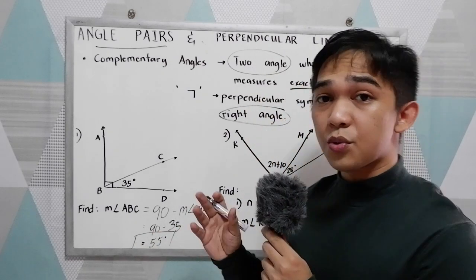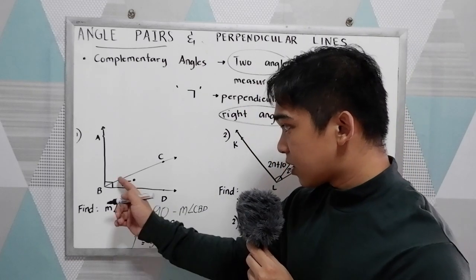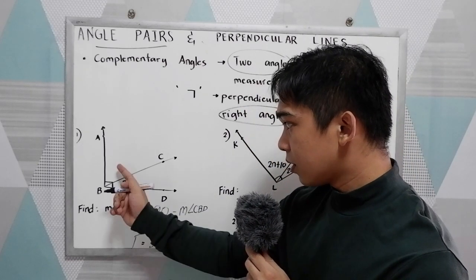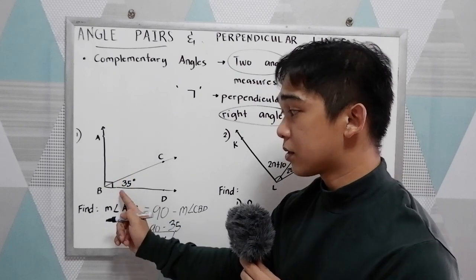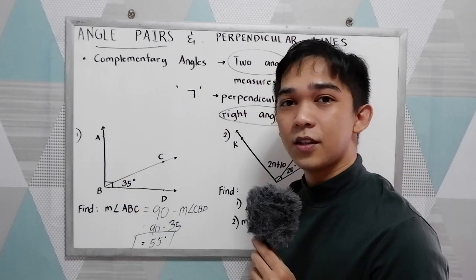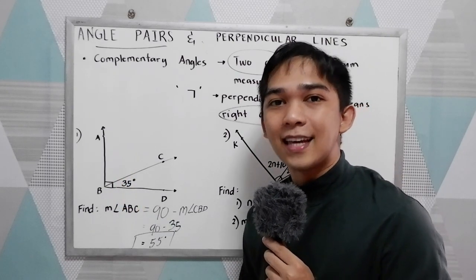If you want to check your answer, just substitute. 55 plus 35 is equal to 90.